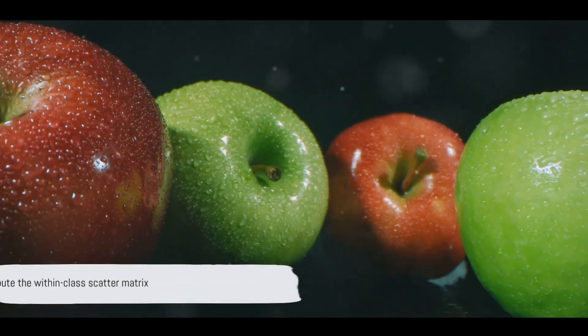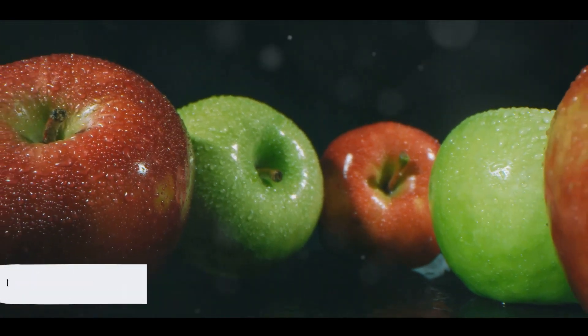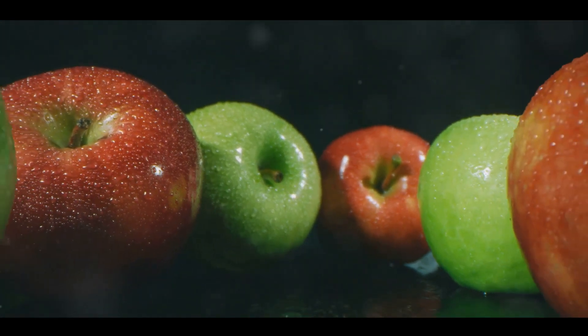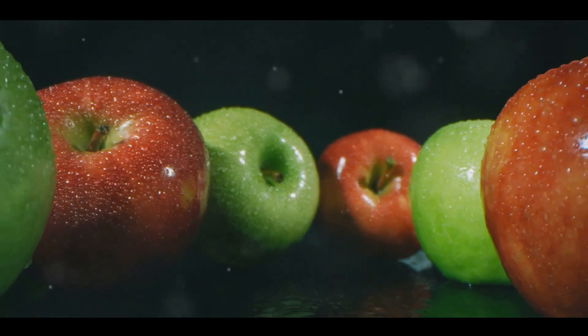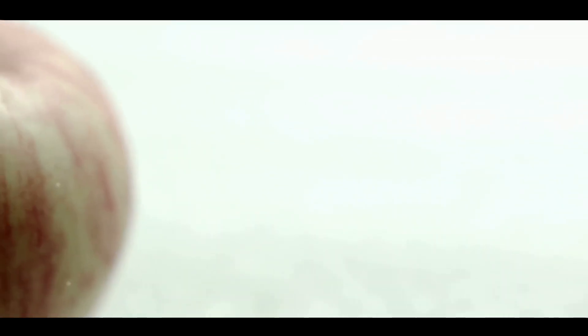Next, calculate the within-class scatter matrix, which measures the variance within each class. In simpler terms, it measures how spread out the apples are from the average apple and how spread out the oranges are from the average orange.